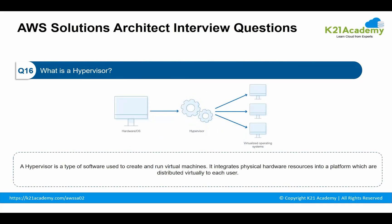The next question: what is a hypervisor? A hypervisor is a type of software used to create and run virtual machines. It integrates physical hardware resources into a platform which is distributed virtually to each user. Hypervisors include Oracle VirtualBox, VMware Fusion, VMware Workstation, and others.